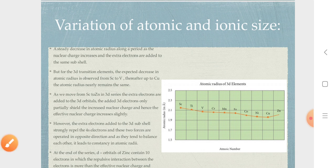Atomic size decreases. But Chromium and Manganese are more or less similar. Thereafter up to Copper, atomic radius nearly remains the same.